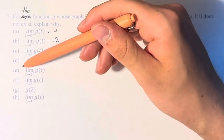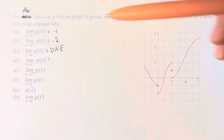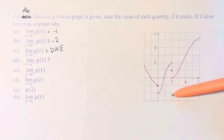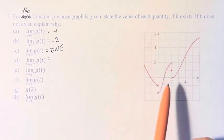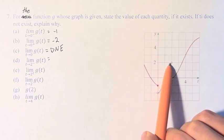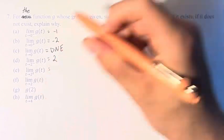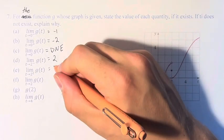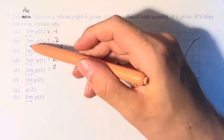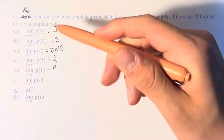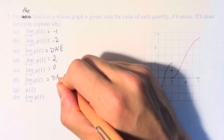The limit as t approaches 2 from the left—similar thing. t equals 2 is right here. As we go from the left, we see that it approaches this point with a y value of 2. From the right, we go down to this point with a y value of 0. And again, since we're not approaching the same value from the left and the right, the limit itself does not exist.